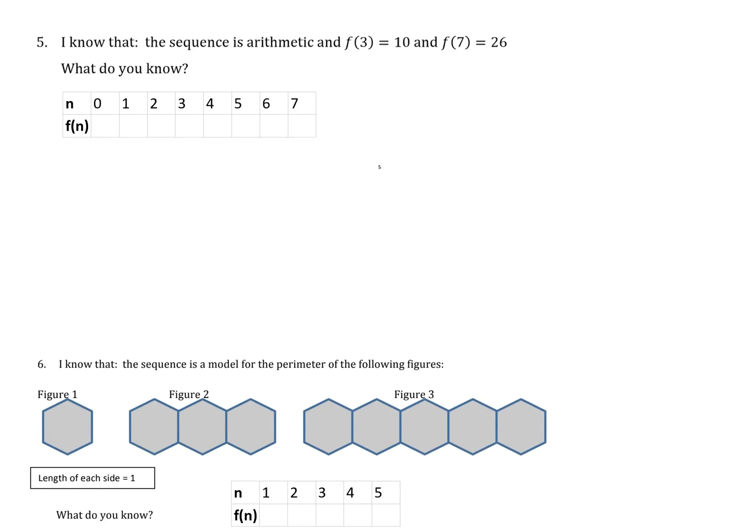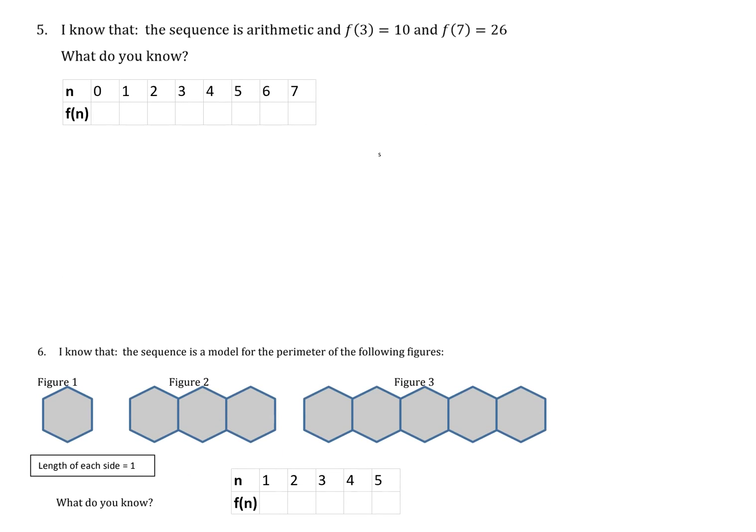I know that this sequence in number 5 is arithmetic, which means it's adding by a constant amount every time, or subtracting, which is adding a negative. We know that f(3) = 10, so I can begin my table: f(3) = 10 and f(7) = 26.